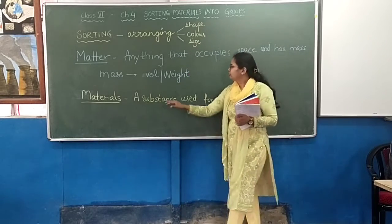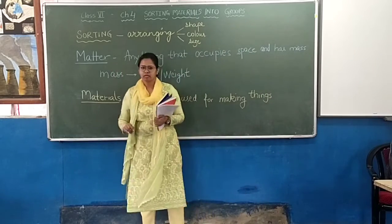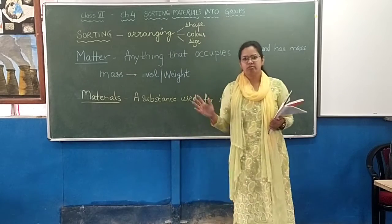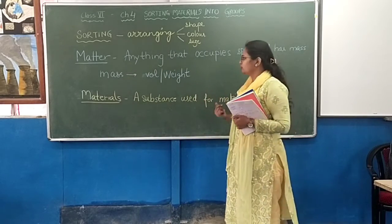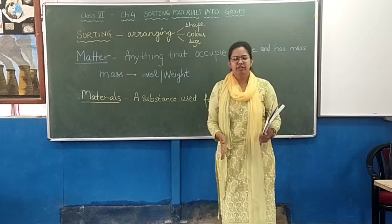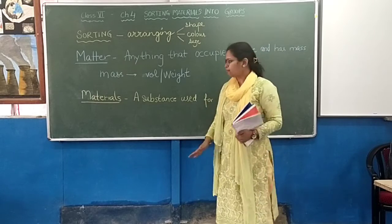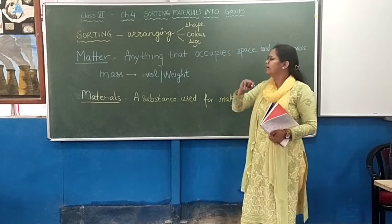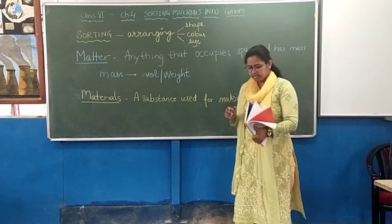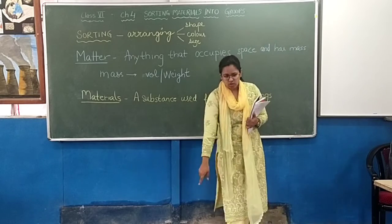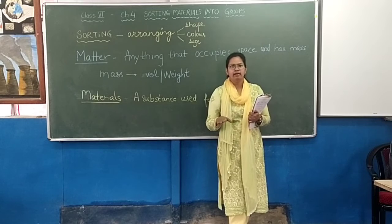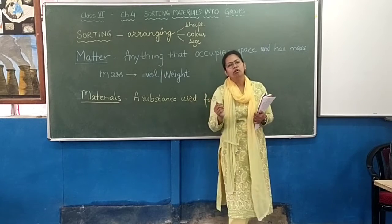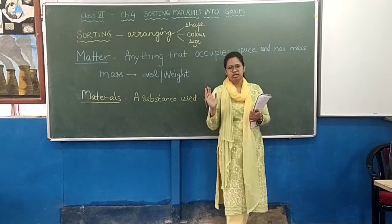From this we come to the definition of matter. What is matter? All around us — humare aspas bohot objects hain. If you can see, even in this video: we have a blackboard, we have chalk with which we are writing, there is a tube light, there is a book in my hand, tiles on the floor, table, chair, fan. All these things are objects, and we are surrounded by a variety of objects.